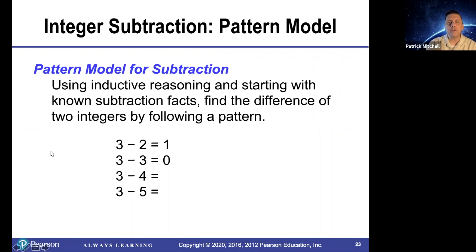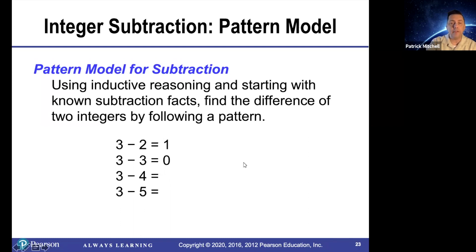We can also use the pattern model for subtraction. Using inductive reasoning and starting with known subtraction facts, find the difference of two integers by following a pattern. For example, we already know that three minus two equals one and three minus three equals zero. So it stands to reason that every time we increase this number by one, the difference will decrease by one. For example, three minus four should be negative one.